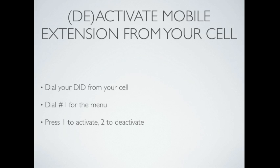If you're out on your cell, you can also deactivate or activate Mobile Extension. To do so, dial your DID number from your cell, press pound 1 for the menu, then 1 to activate or 2 to deactivate.